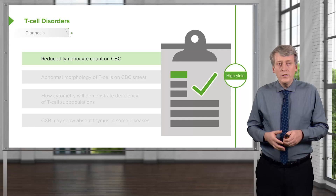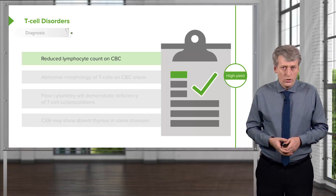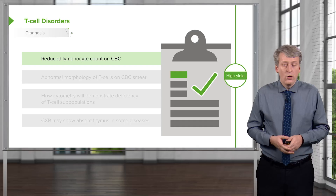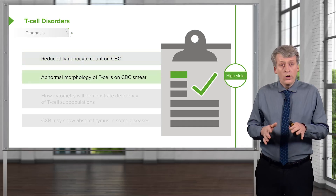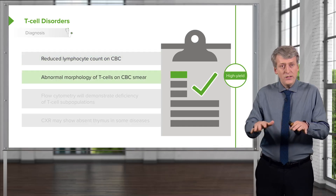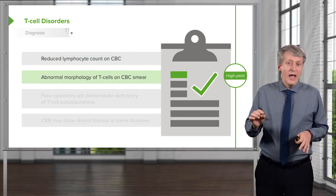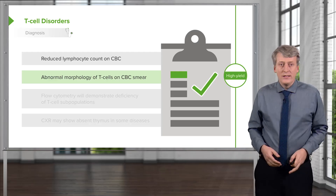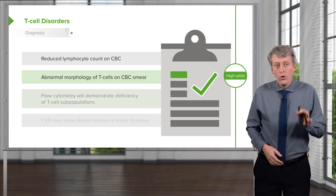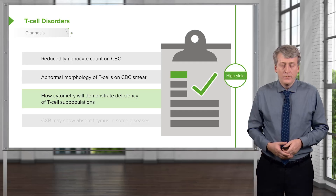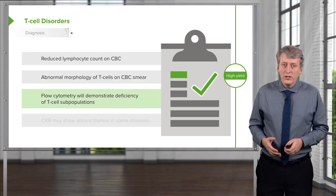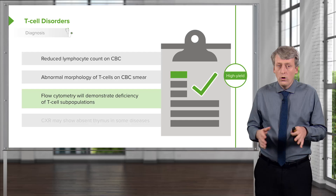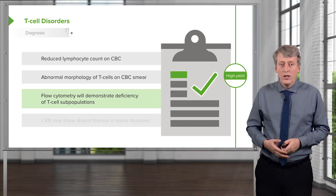How do we diagnose a T-cell disorder? We may see a reduced lymphocyte count on CBC, or on the CBC smear we may notice abnormal morphology of the T-cells. If we wish to make the diagnosis definitively, we order flow cytometry. Flow cytometry will demonstrate deficiency of T-cell subpopulations or of all T-cells, depending on the problem.